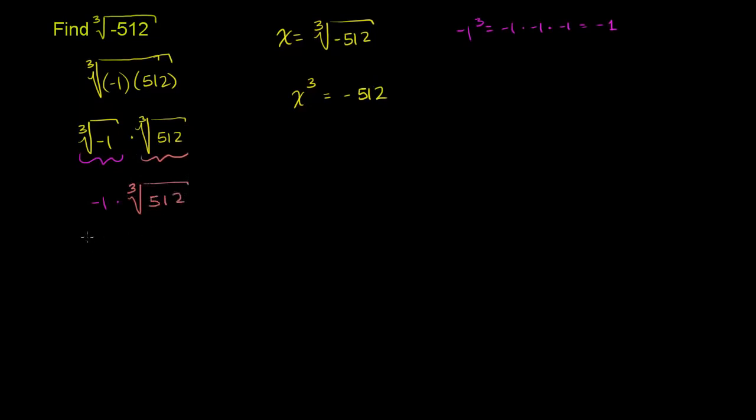And let's think what this might be. So let's do the prime factorization. So 512 is 2 times 256. 256 is 2 times 128. 128 is 2 times 64. We already see it 2 three times.